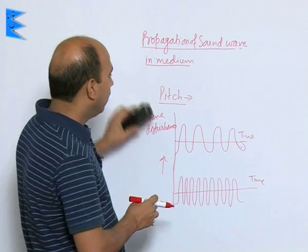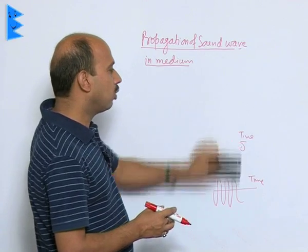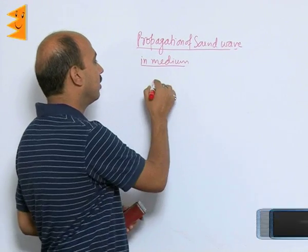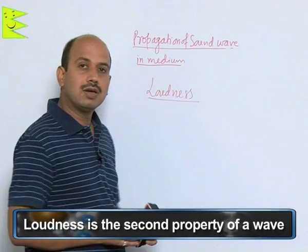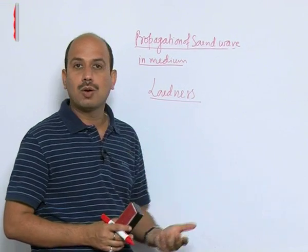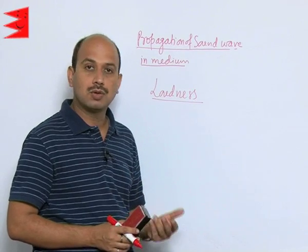Now see the next one. The next property or characteristic of the wave is loudness. Loudness is basically whenever you hear some sound, some sounds are louder, some sounds are very soft.